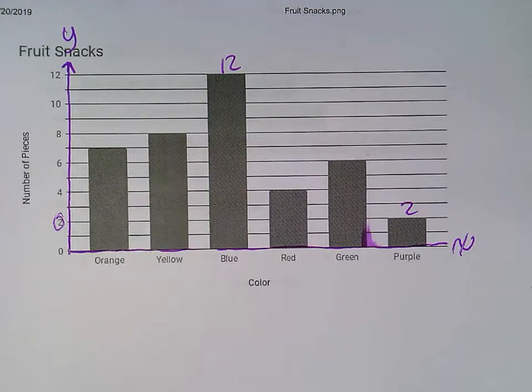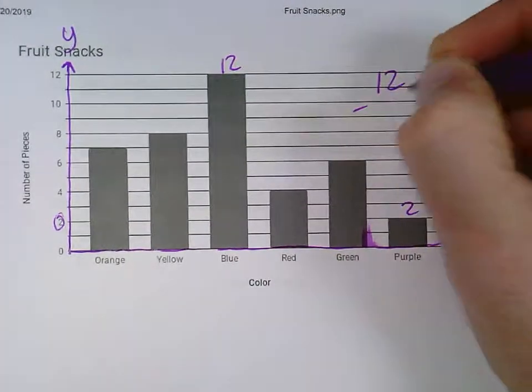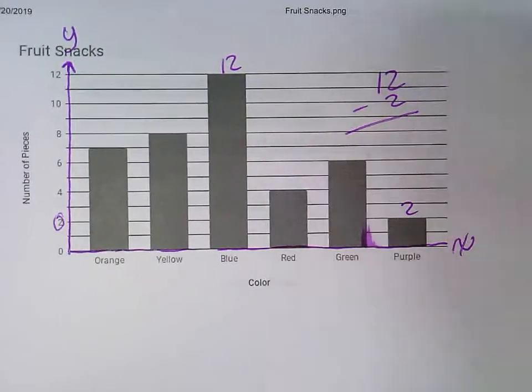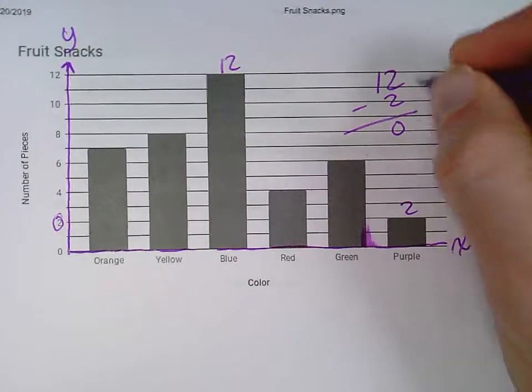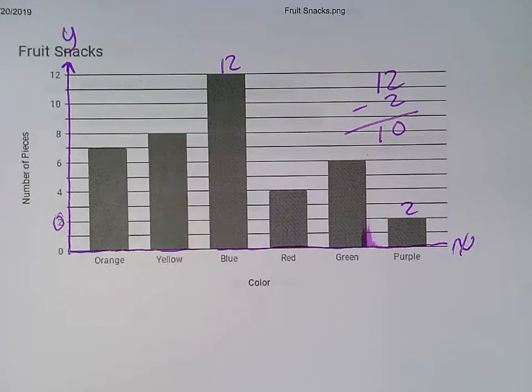So to figure out the range, I do the largest minus the smallest. 12 minus 2, 2 minus 2 is 0. 1 minus nothing is 1. So my range for this data is 10.